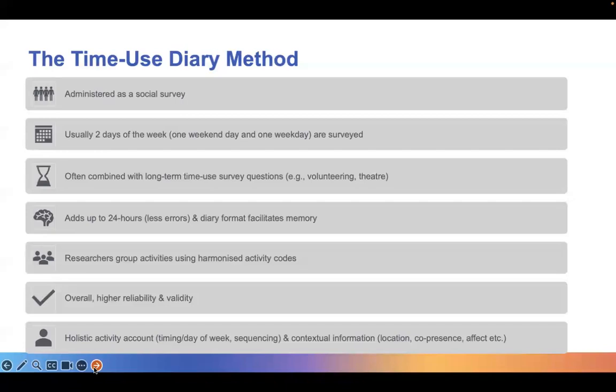Once diaries are completed and collected, researchers and statistical agencies code respondent descriptions using harmonized activity codes. It is thus obvious that this method provides a holistic account of daily activities. Aside duration, timing and sequence of activities is also captured. And in addition to this, location of activity, co-presence and affect, as well as other dimensions of interest to researchers, may be captured too.